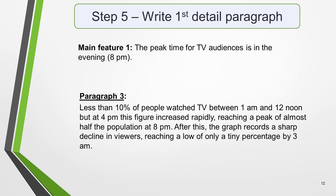Paragraphs 3 and 4 are where you include more detailed information about the data in the graphic. In paragraph 3, you should give evidence to support your first key feature, and don't forget to make comparisons where relevant. Our first main feature is: the peak time for TV audiences is in the evening at 8pm. An example of what you could write: 'Less than 10% of people watch TV between 1am and 12 noon, but at 4pm this figure increased rapidly, reaching a peak of almost half the population at 8pm. After this, the graph records a sharp decline in viewers, reaching a low of only a tiny percentage by 3am.'